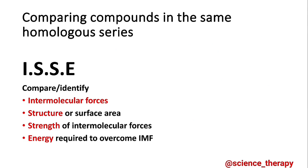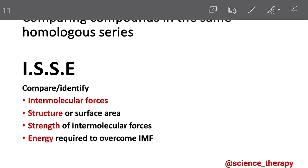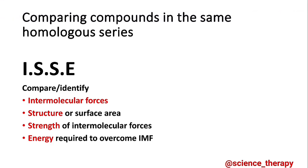Now we have comparing compounds in the same homologous series. For this, we use the mnemonic ISSE, which we use to remember how to solve questions involving the comparison of compounds in the same homologous series. For I, we identify the intermolecular forces. For the first S, we compare the structure or surface area. For the second S, we compare the strength of the intermolecular forces. And for E, we speak of the energy required to overcome the intermolecular forces.